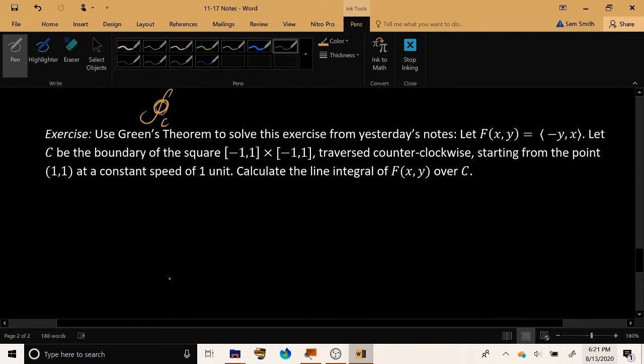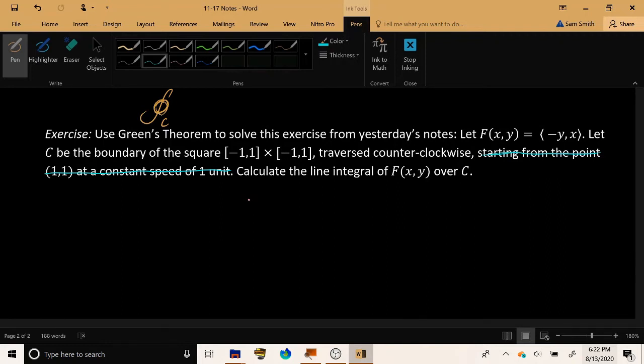Use Green's theorem to solve the exercise from yesterday's notes. So let f of (x,y) equals (-y,x). Let C be the boundary of the square [-1,1] × [-1,1] traversed counterclockwise. And previously I had added this extra stuff, but it really doesn't matter for us right now. So I'm just going to go ahead and erase that. Calculate the line integral of f(x,y) over C. This is the exercise that we did yesterday. It took two pages and 20 minutes for us to solve.